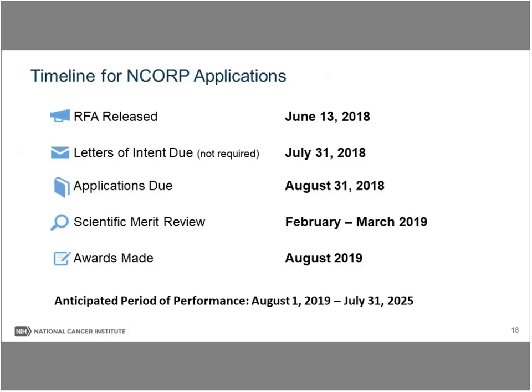The RFA was released in mid-June. Letters of intent are due July 31 — not required but very helpful. Applications are due August 31; late applications will not be accepted. Scientific merit review is expected February to March 2019, with intent to make awards in August 2019. The six-year performance period would run from August 1, 2019 to July 31, 2025.